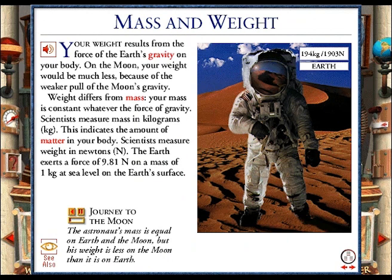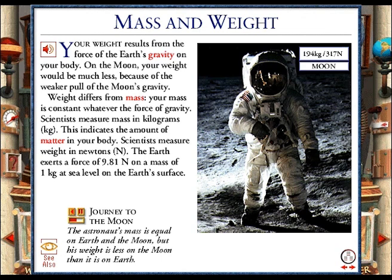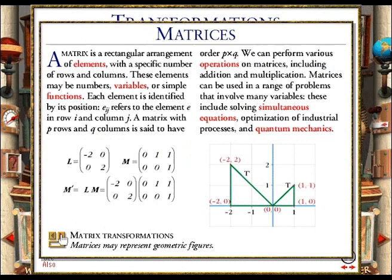The mass of the astronaut plus a heavy spacesuit is 194 kilograms. On Earth, the weight of the spacesuited astronaut is 1903 newtons, because the Earth's gravity exerts a force of 9.81 newtons on each kilogram. On the Moon, the astronaut's weight is only one-sixth of what it is on Earth, because the Moon's gravity is only one-sixth as strong. The astronaut and space suit weigh just 317 newtons. Their mass, however, is still 194 kilograms, as it does not vary with gravity.